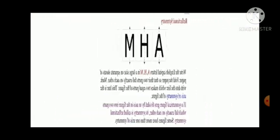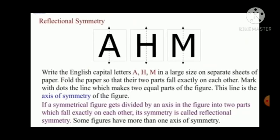Now let's learn about Reflectional Symmetry. Write the English capital letters A, H, M in a large size on separate sheets of paper. Fold the paper so that their two parts fall exactly on each other. Mark with dots the line which makes two equal parts of the figure. This line is the axis of symmetry of the figure.